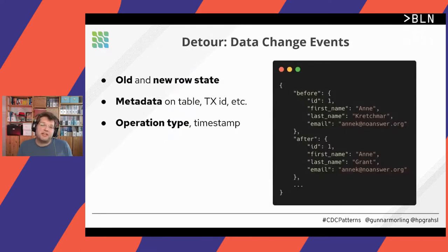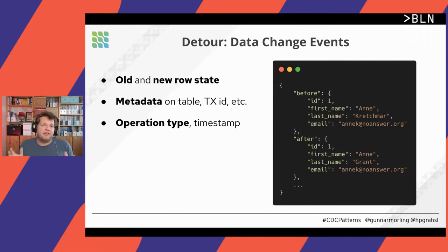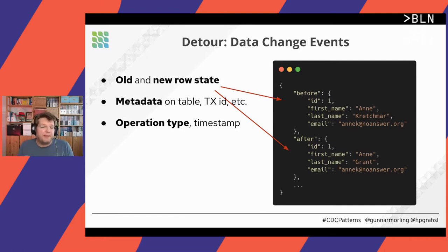So that's change data capture in a nutshell. The change events in Debezium essentially have three big parts: the old and new state of the changed row, some metadata, and the operation type and timestamp. In the old and new row state, you essentially have a structure which resembles the tables being captured — one field per column.